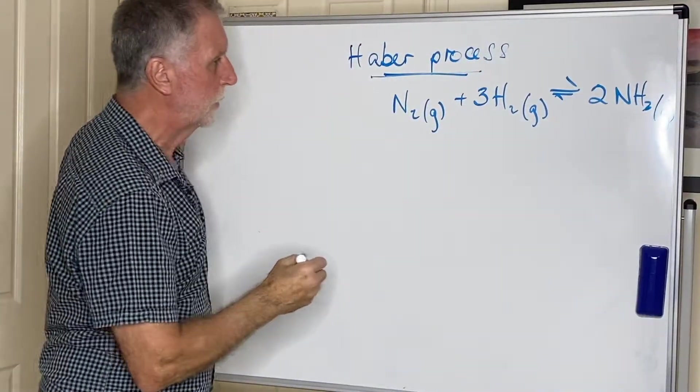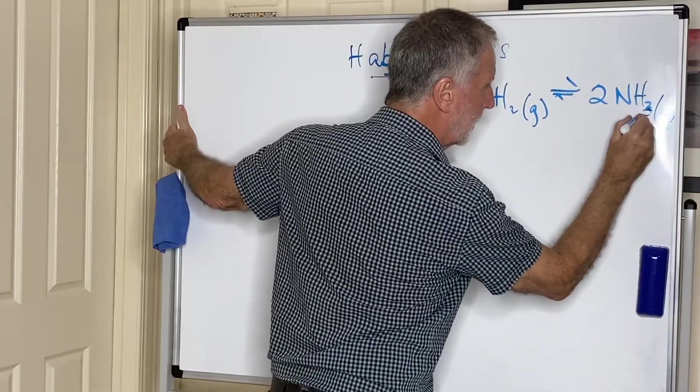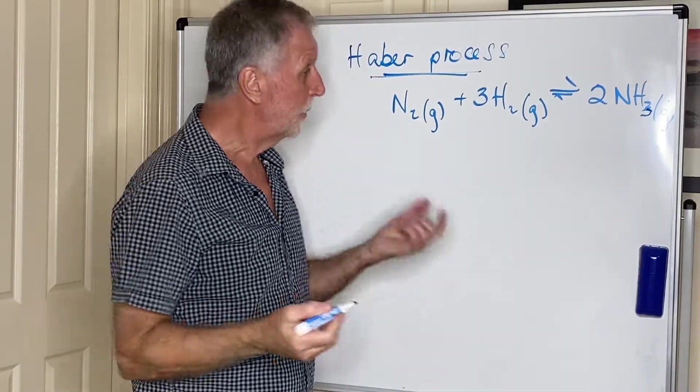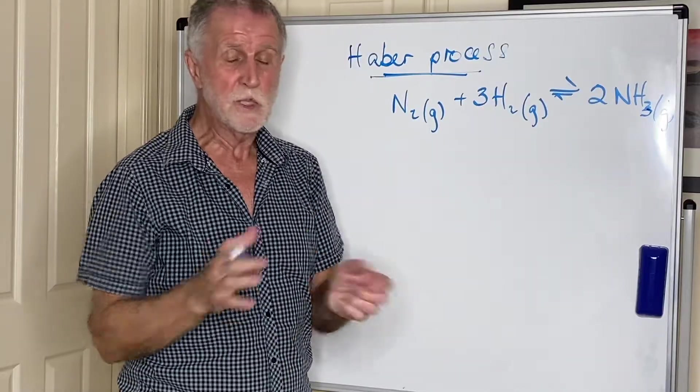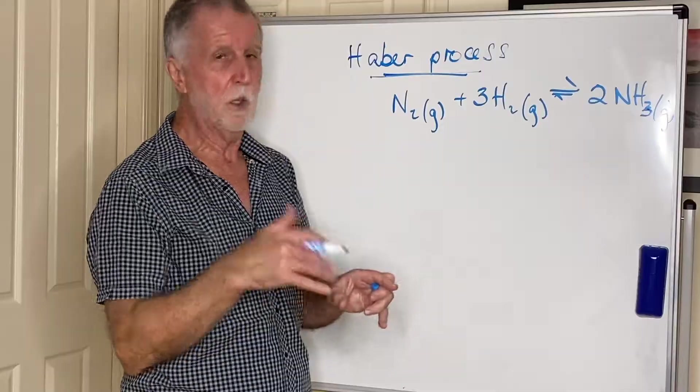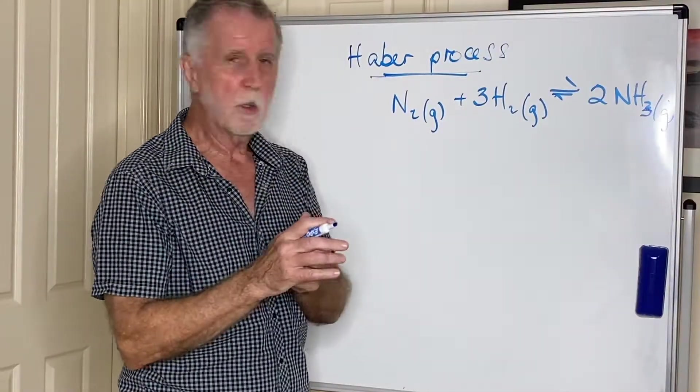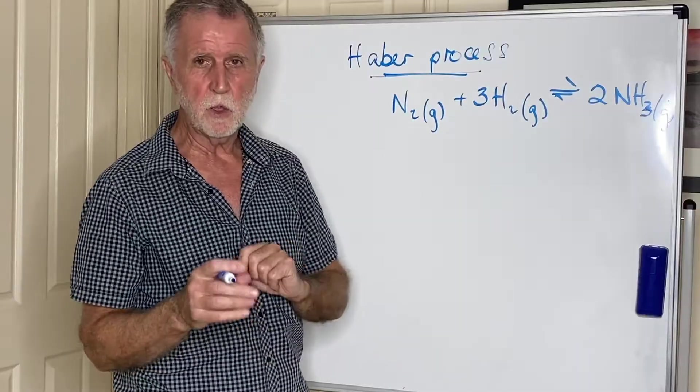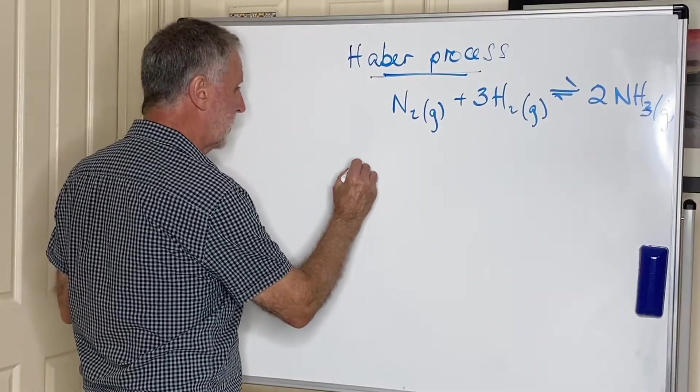The reason he got a Nobel Prize for it was because ammonia is used to make fertilizers, and without ammonia we simply would not have enough food to feed the world population. I know you may argue we don't anyway, but it would be a lot worse without ammonia and fertilizers. The other one's called the Contact process.